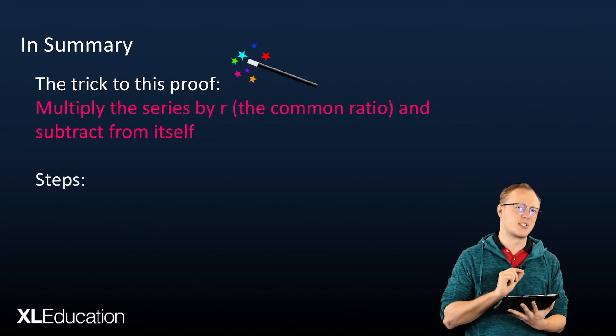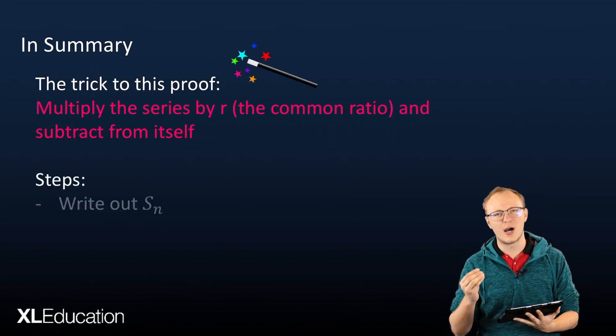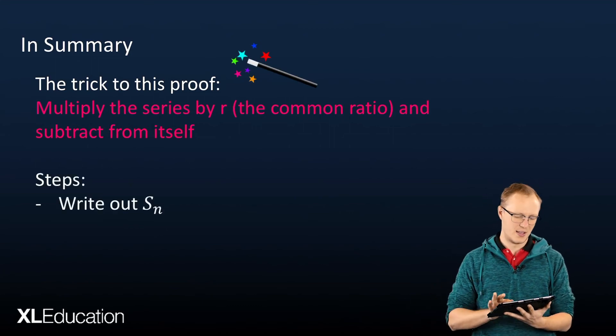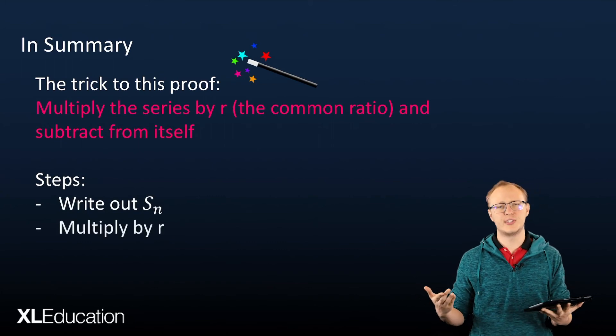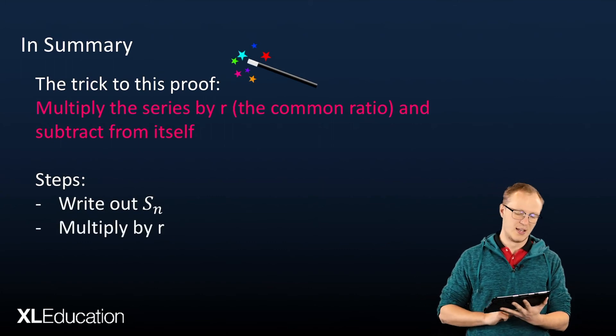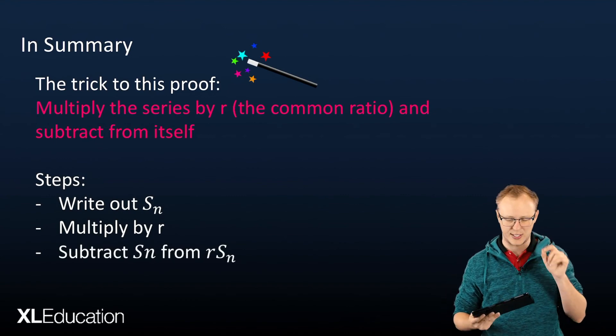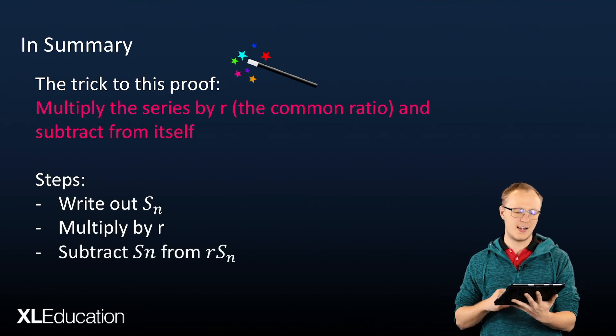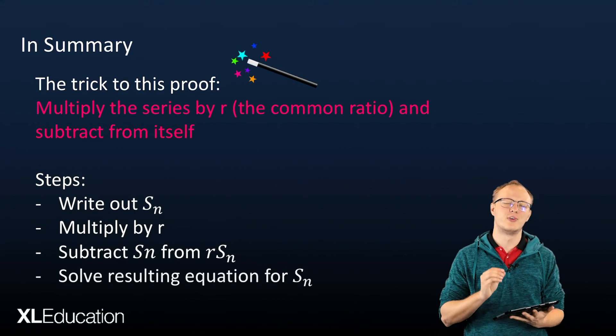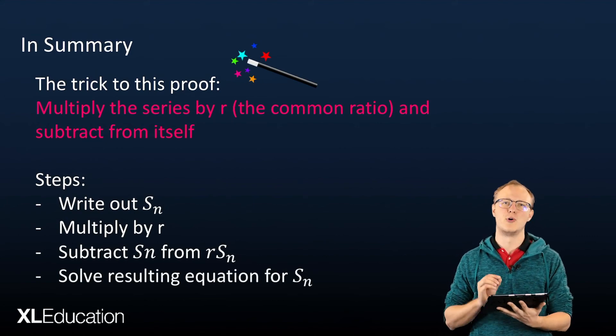Then the steps that you must remember is to write out Sn, then multiply all the terms by r, subtract Sn from rSn—that's the magic little trick that you remember there—and then you're going to solve the resulting equation for Sn.